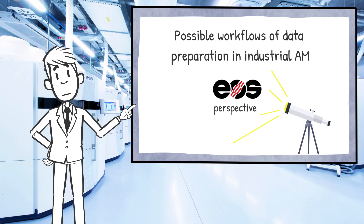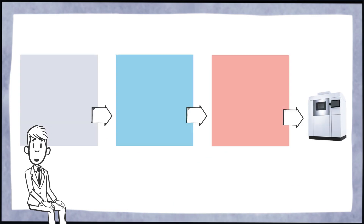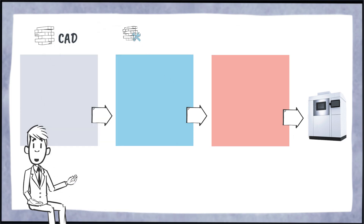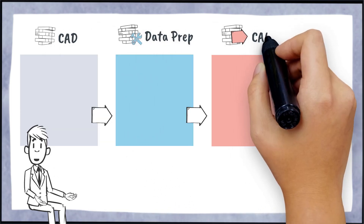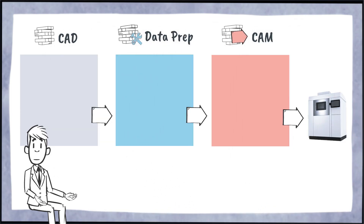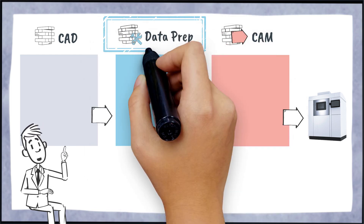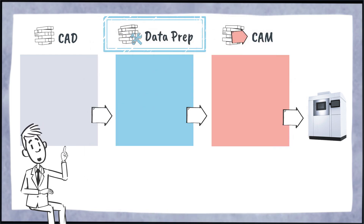Let's start with a simplified overview. There are basically three steps of data preparation both for M and P parts: CAD, data preparation, and CAM. Data preparation is actually a mixture of CAD and CAM but is used here as an extra step in order to visualize all workflow steps.